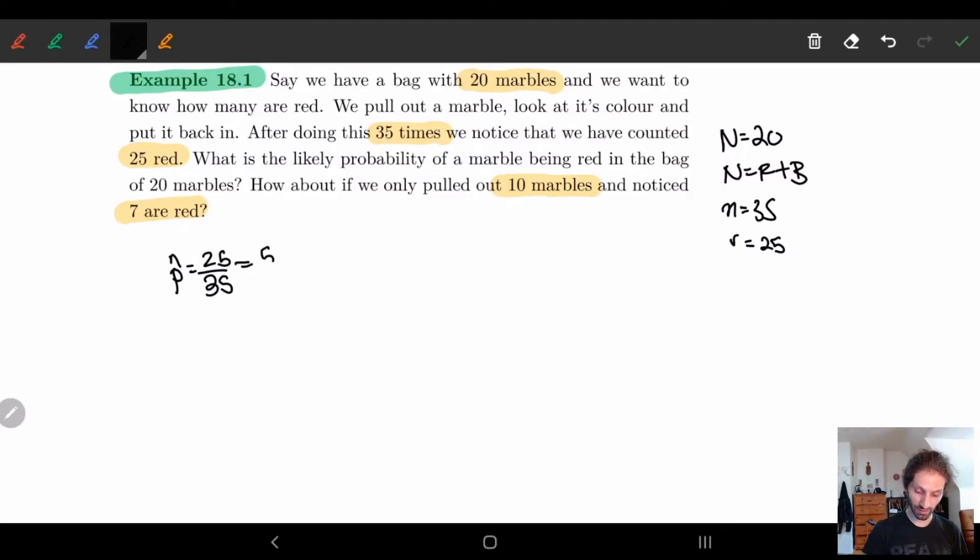And so this is nothing more than 5 sevenths. So we have roughly 5 sevenths relative frequency. So if I wanted a 99.9% confidence interval, what do we do?